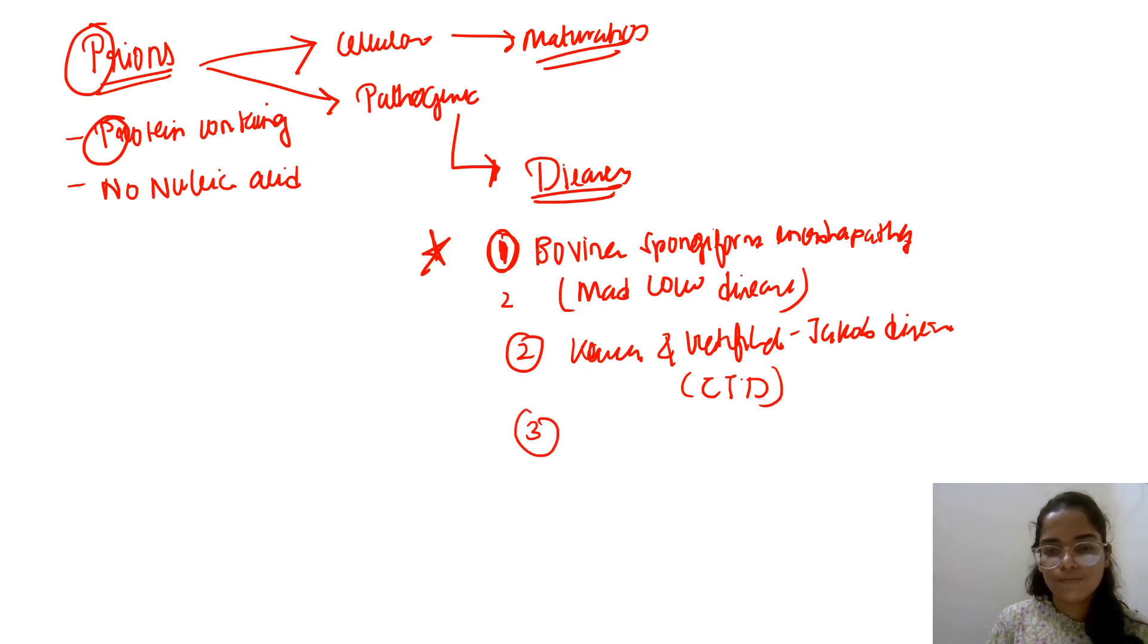Then there is Fatal Familial Insomnia. So these are some diseases which are caused by prions. You can also make a list for yourself of prion-related diseases, but this is the important thing that comes from this topic.